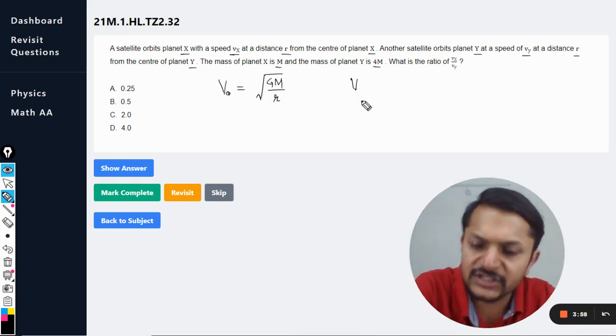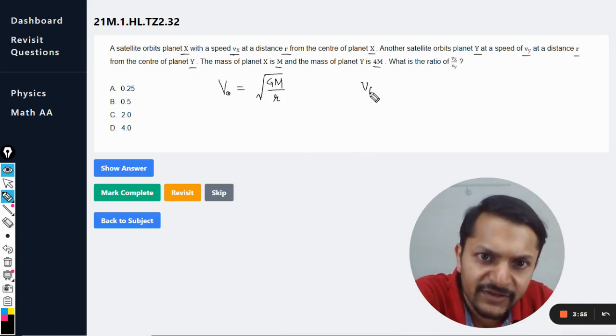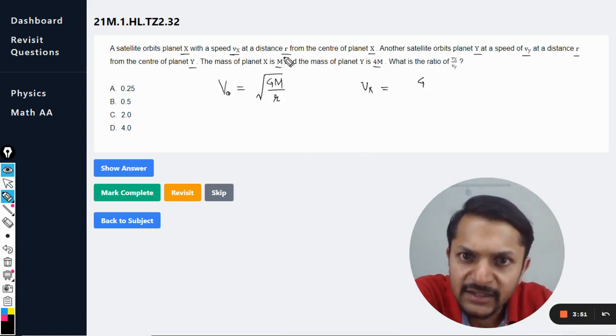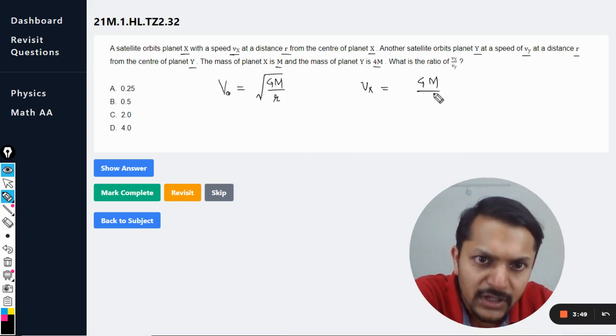So the orbital velocity in the case of planet X is given by VX, which is square root of GM over R. And the velocity VY, the mass is now 4 times, but the distance is still R.